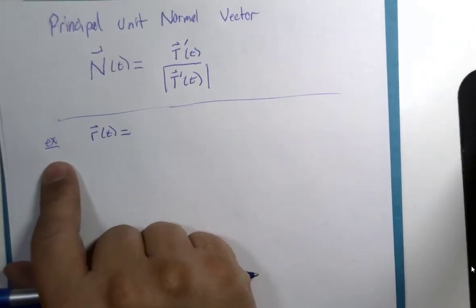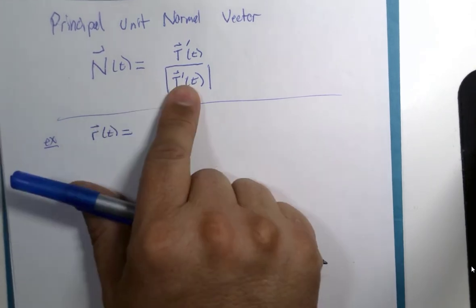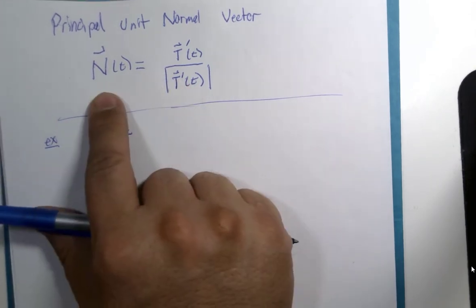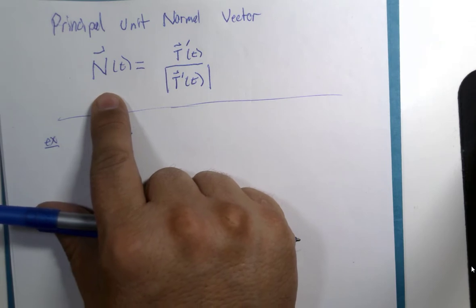So we're going to look at an example of using this definition to calculate the principal unit normal vector.